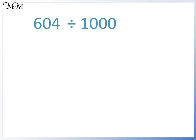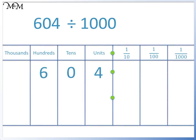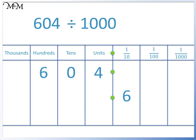Here's another example: 604 divided by 1000. Remember, to divide by 1000, we move each digit three places to the right. We'll start with the 6: 1, 2, 3. We move the 6 to the tenths column. The rest of the digits follow. Because there are no digits before the decimal point, we put a 0 in the units column. 604 divided by 1000 equals 0.604.